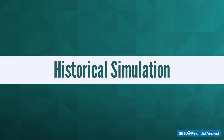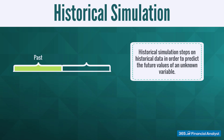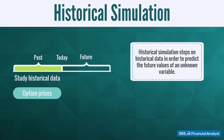Historical simulation methods step on historical data in order to predict the future values of an unknown variable. The underlying assumption is that past historical data is the best predictor for the distribution of the unknown factors describing the variable. For example, under the historical simulation method, if option prices are described by interest rates and market volatility, the best way to estimate these two parameters would be to consider how interest rates and market volatility behaved historically.